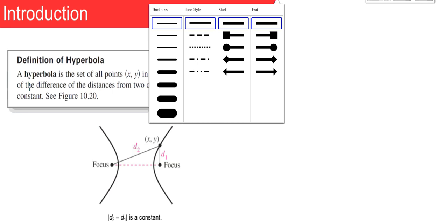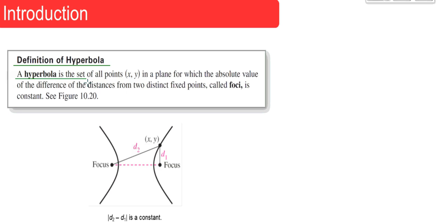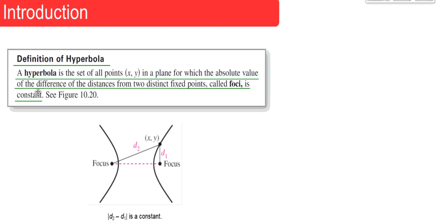A hyperbola is a set of all the points (x, y) in a plane for which the absolute value of the difference of the distances from two distinct fixed points called foci is constant. There's an animation about that in our introduction to conics section. You can draw the picture if you want, otherwise we'll have another picture with more specific information as we move on.